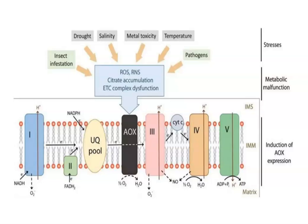AOX provides the plant respiratory system with built-in flexibility regarding coupling among carbon metabolic pathways, ETC activity, and ATP turnover. Importantly, AOX does not pump protons, so the transfer of electrons through AOX does not generate a transmembrane potential. Instead, the drop in free energy between ubiquinol and oxygen is dissipated or wasted as heat.